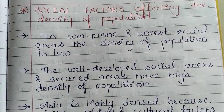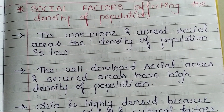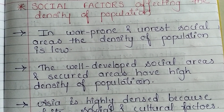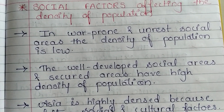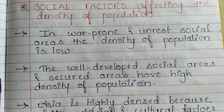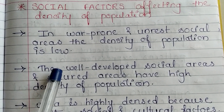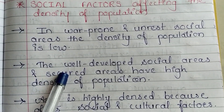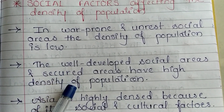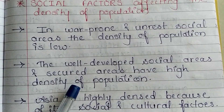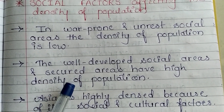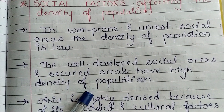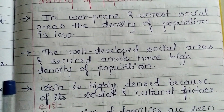Well-developed and secured social areas have high population density. Wherever the area has good social facilities like better housing, better health facilities, better education, those areas are more populated. Better transport facilities also contribute to the increase in the population of a region.